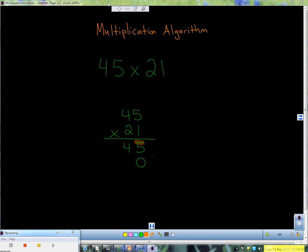2 times 5 is 10. Now I have to put my 0 down here and I carry my 1 up top. 2 times 4 is 8, plus 1 is 9. So I put my 9 right here.